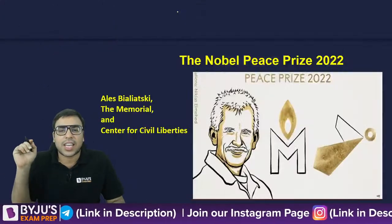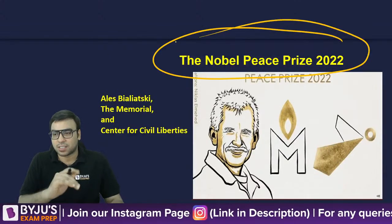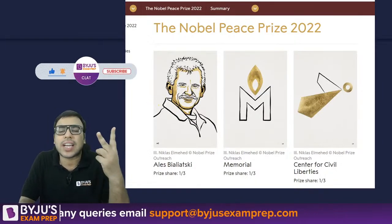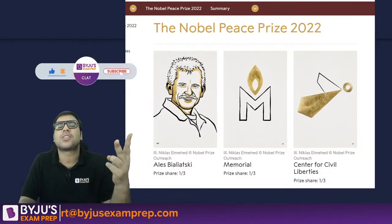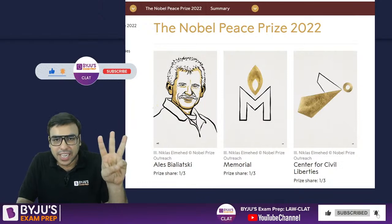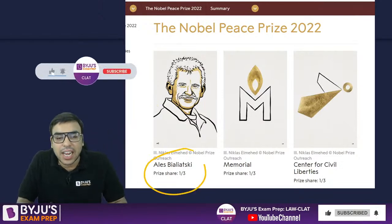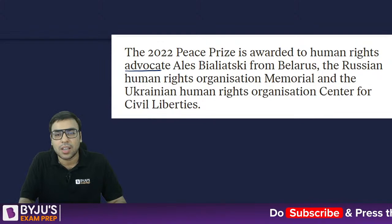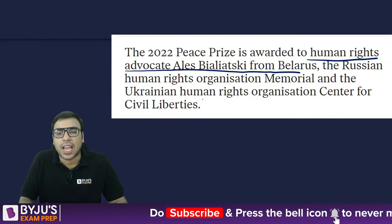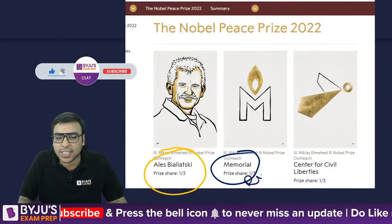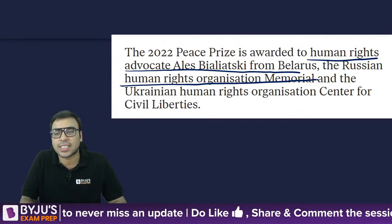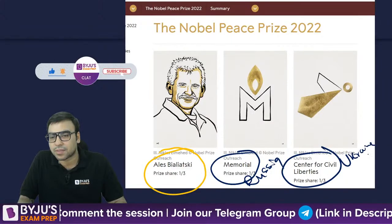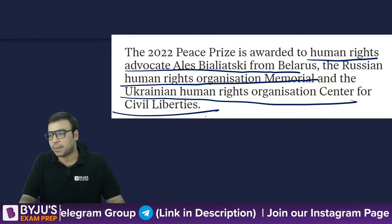The next is the Nobel Peace Prize, given to three recipients — one person and two organizations. The first is Ales Bialiatski, a human rights advocate from Belarus. Memorial is a Russian human rights organization, and the Center for Civil Liberties is a Ukrainian human rights organization.